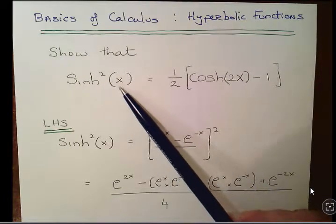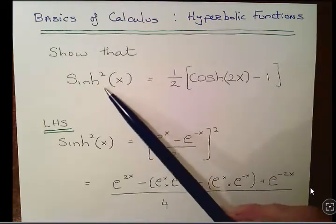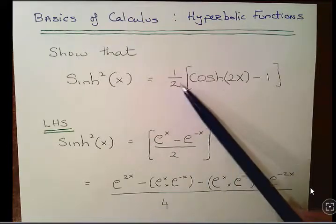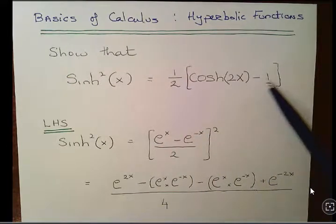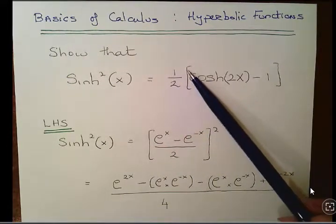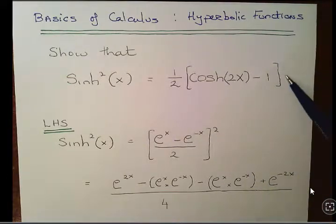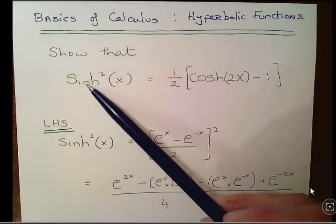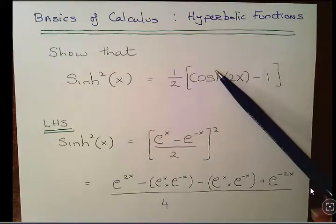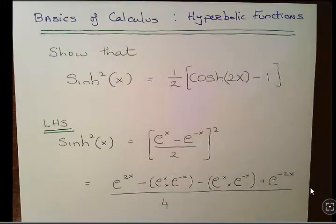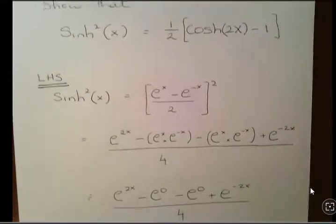So anyway, here we have shine squared of x—essentially sinh²(x)—equal to a half of cosh(2x) minus 1. Just remember that minus 1 is in the brackets. Essentially what we have to show is that this side is equal to this side. It's very straightforward.